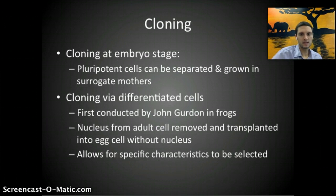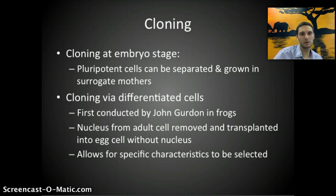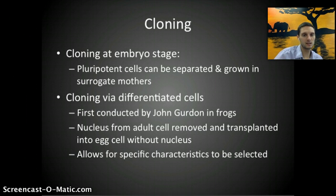Getting back to the topic of cloning, it is possible to clone organisms — most famously illustrated by the cloning of Dolly the sheep. Cloning at the embryo stage involves taking pluripotent cells, separating them, and growing them in surrogate mothers. Cloning through differentiated cells was first conducted by John Gurdon in frogs, where the nucleus from an adult cell was removed and transplanted into an egg cell without a nucleus, allowing specific characteristics to be selected. However, differentiated cell cloning is extremely difficult in mammals and is probably not a possibility in the near future.